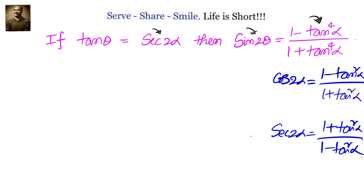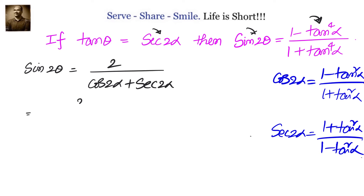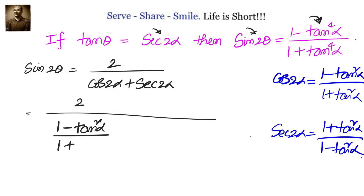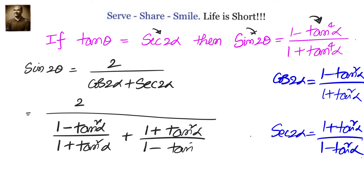Substituting, we have sin 2θ equals 2 divided by: cos 2α, which is (1 minus tan² α)/(1 plus tan² α), plus sec 2α, which is (1 plus tan² α)/(1 minus tan² α).